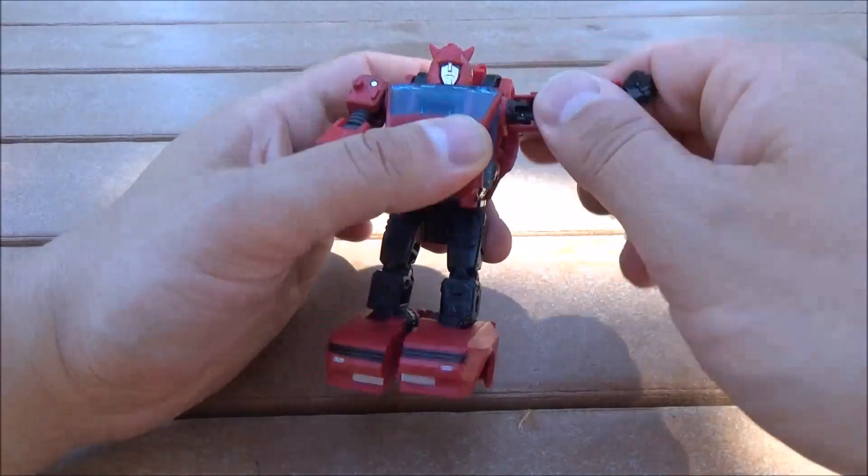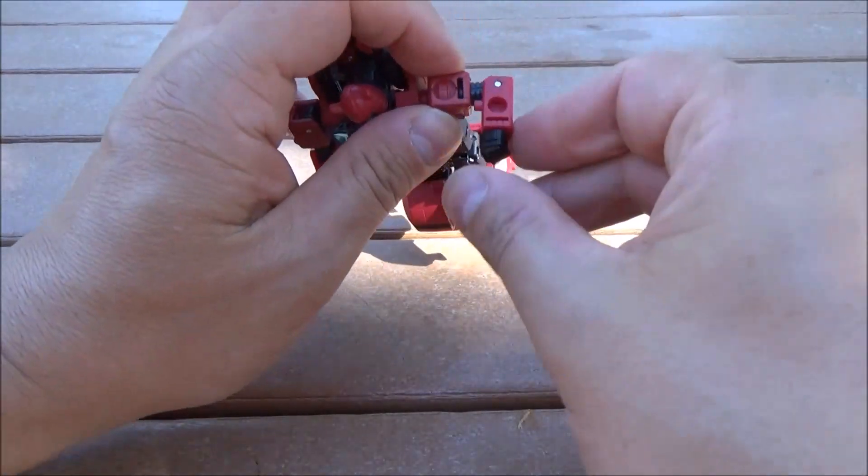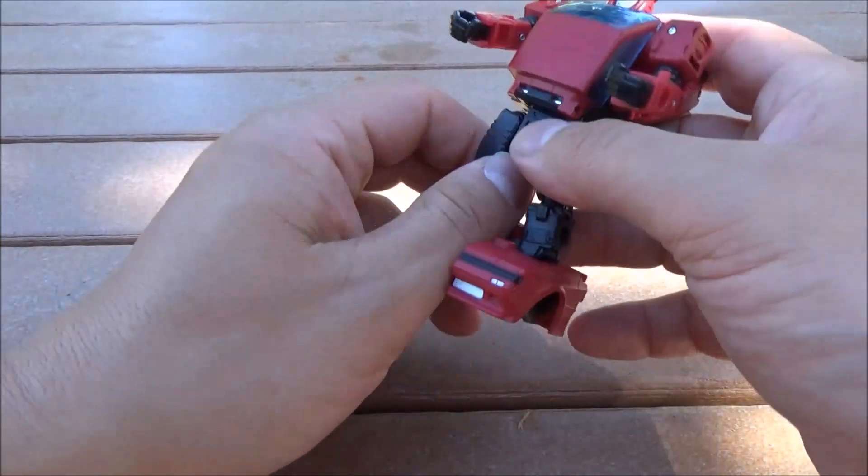Arms are on this double hinge assembly here. Mushroom peg bicep. And again, double jointed elbow with wrist rotation. Very nice. Waist does rotate here.